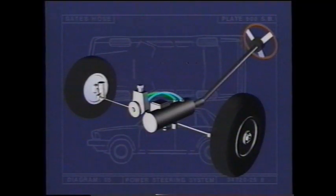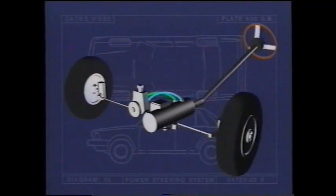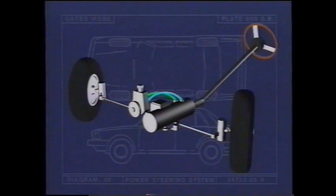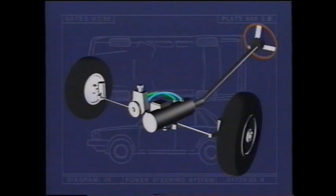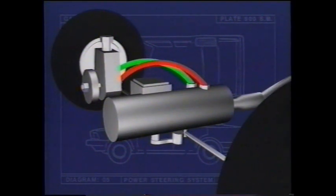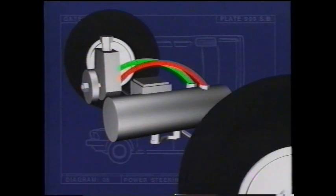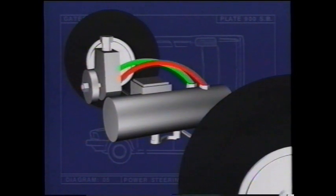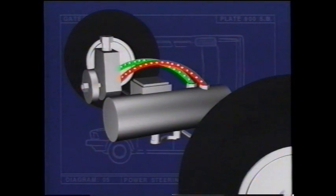In simplest terms, all power steering systems use hydraulic pressure provided by the power steering pump to amplify the force the driver applies to the steering wheel. When the engine is started, the pump puts the fluid under pressure. When the steering wheel is turned to the right, the control valve senses the direction of rotation and channels pressurized fluid to the right side of the power cylinder. The resulting motion is transferred to the vehicle's wheels, augmenting the mechanical force applied by the driver.